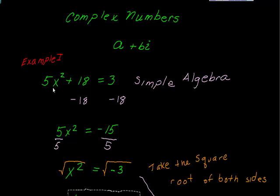In example 1, we have 5x squared plus 18 is equal to 3. Start off by just doing some simple algebra. We're going to add negative 18 to both sides. If you can follow in green, that gives us 5x squared is equal to negative 15.